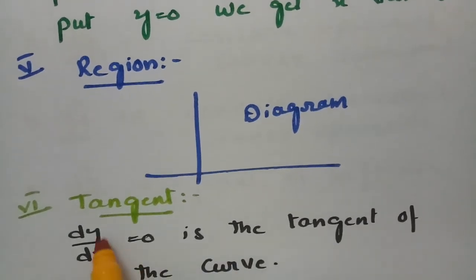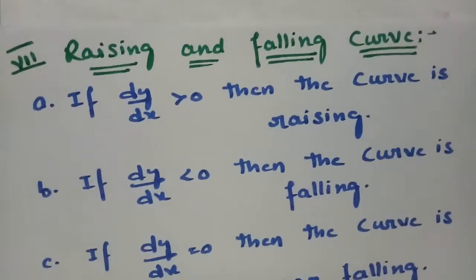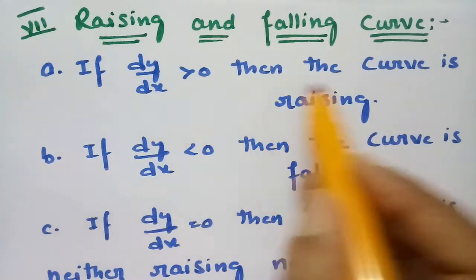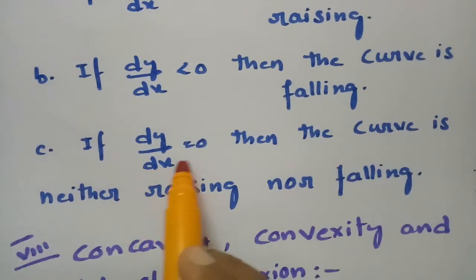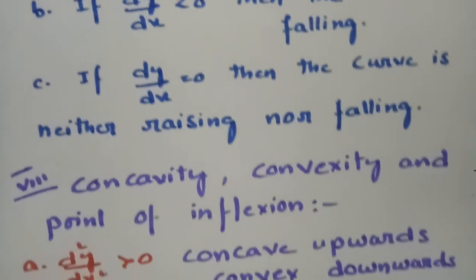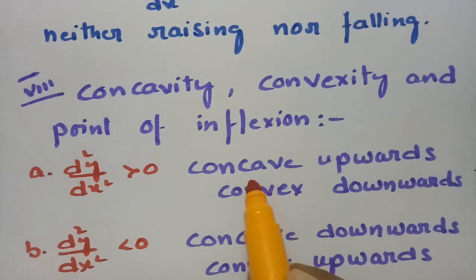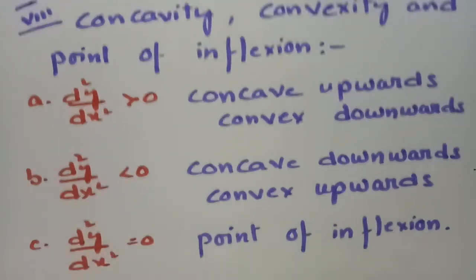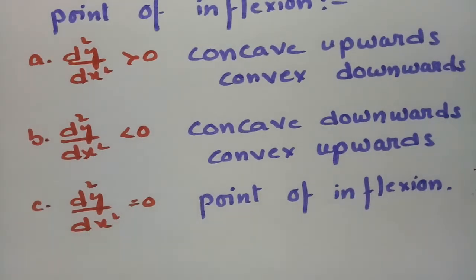The next step is rising and falling curves. If the derivative is positive the curve is rising; if less than 0 it is falling; if equal to 0 it is neither rising nor falling. The next step is concavity, convexity, and point of inflection. If the second derivative is positive the curve is concave upwards and convex downwards; if less than 0, concave downwards and convex upwards; if equal to 0, the curve has a point of inflection.